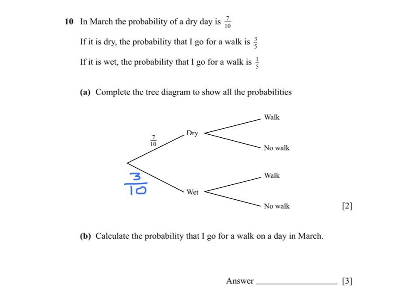If it is dry, the probability that we go for a walk, so dry and walk, is 3 fifths. Again using the fact that probabilities add to 1, then no walk must be 2 fifths. If it is wet, the probability that I go for a walk is 1 fifth, which means the probability of no walk is 4 fifths.